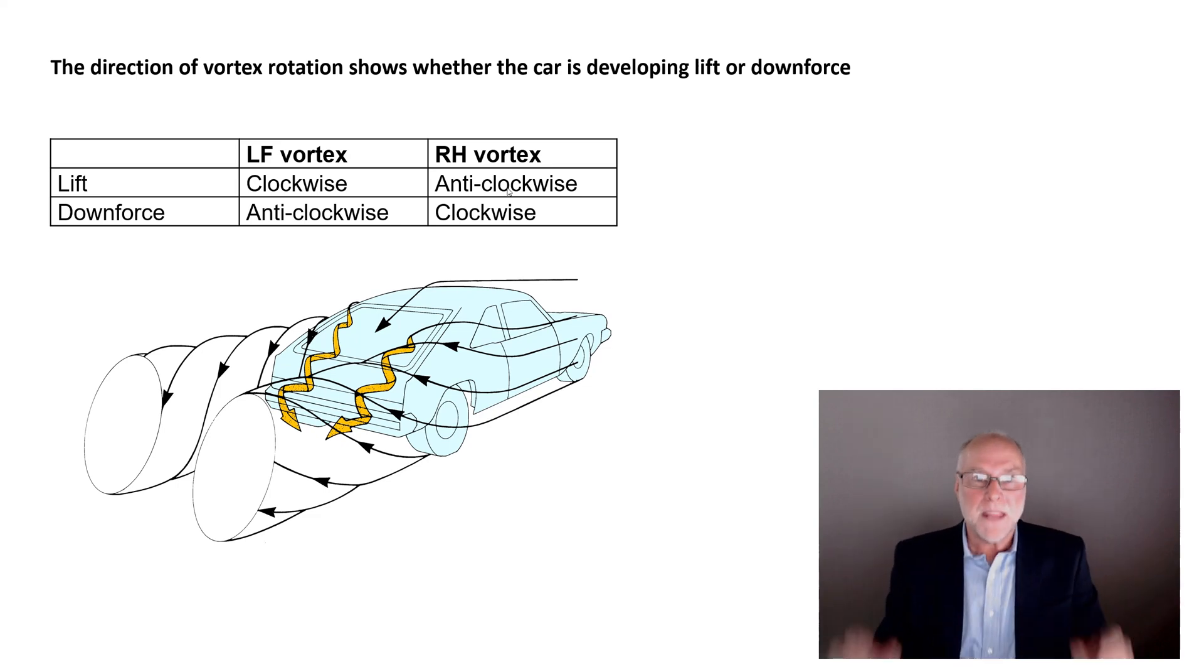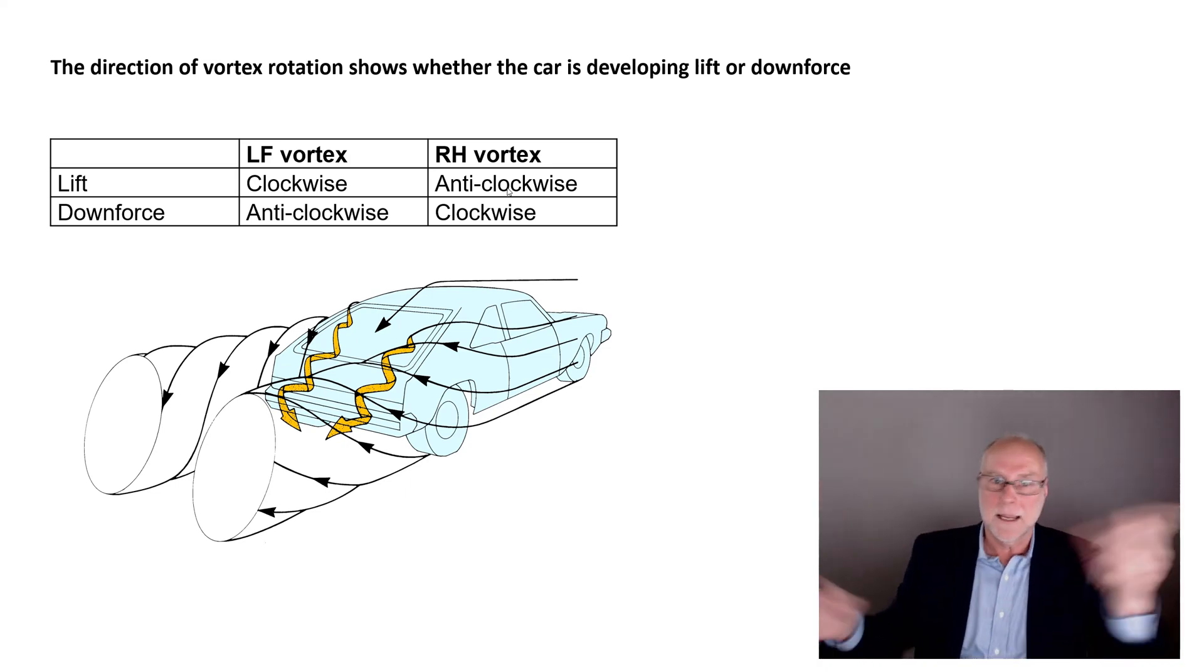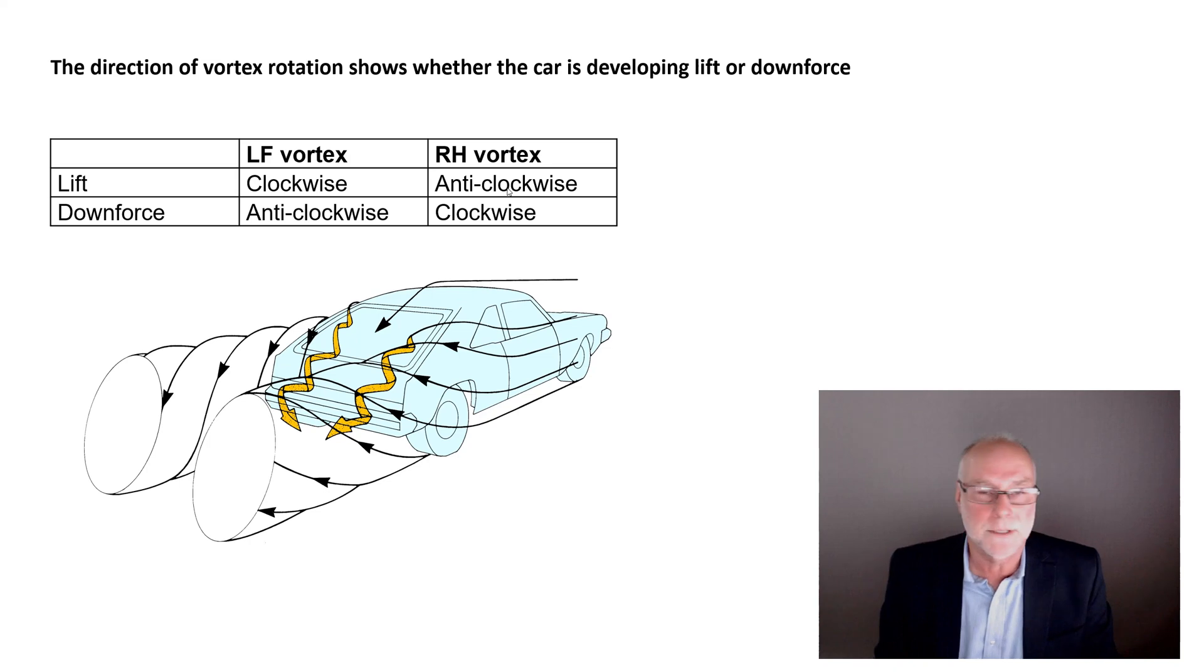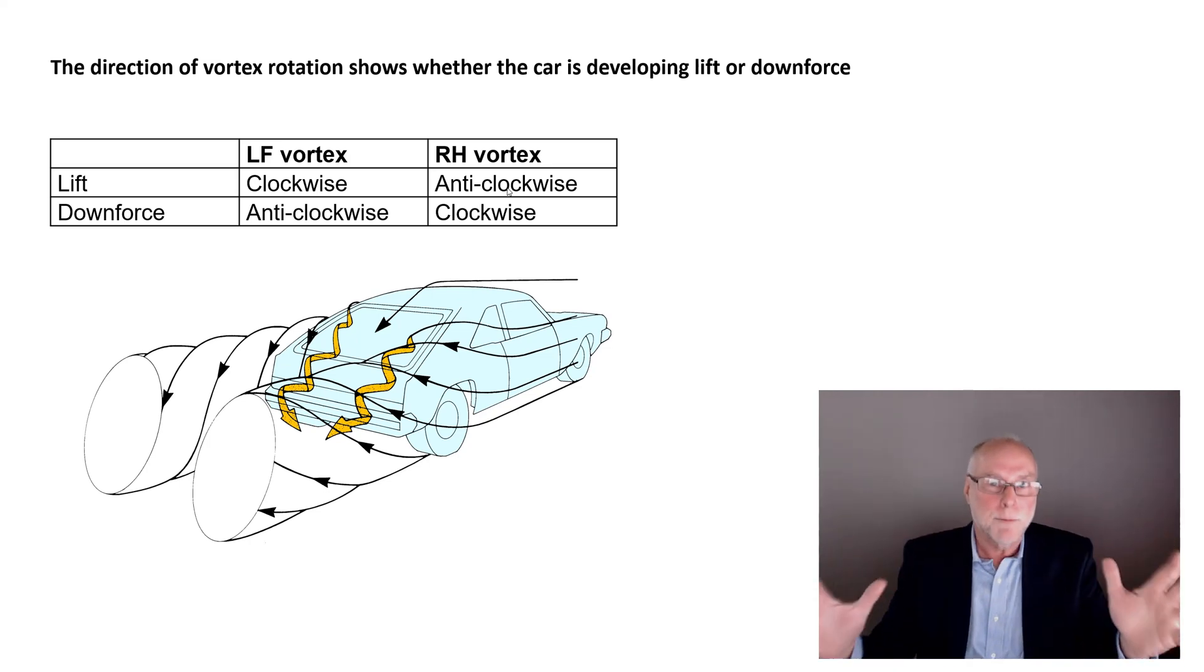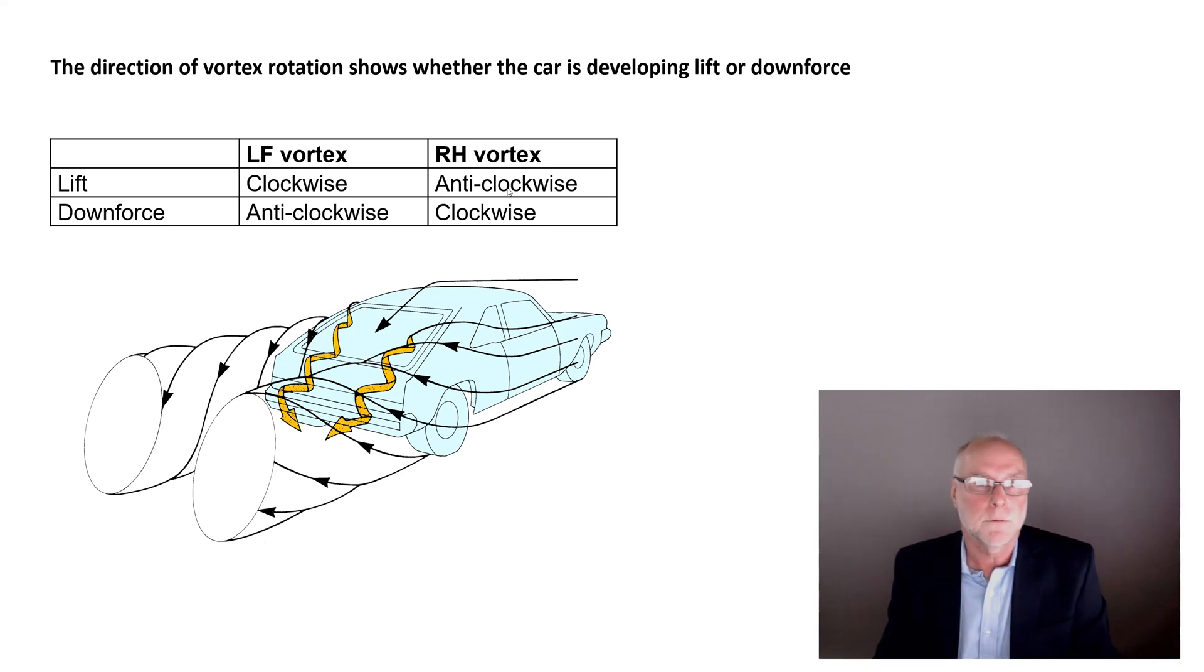So the direction of vortex rotation shows the aerodynamic behavior of the body as a whole if the body flows are dominated by two vortices. If there are all sorts of other appendages sticking out and turbulence or vortices going on, this will not apply. But where you've got these two basic shapes, especially the fastback shape, the direction of vortex flow will show whether the car is developing lift or downforce.